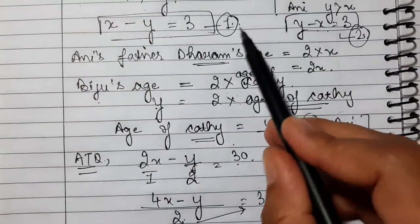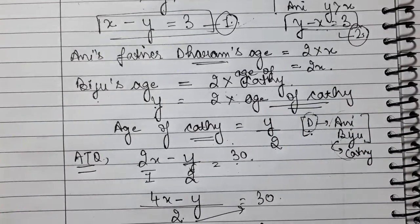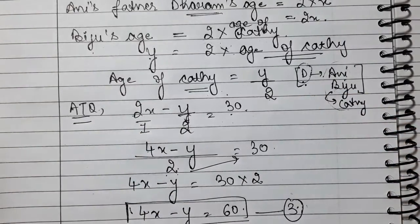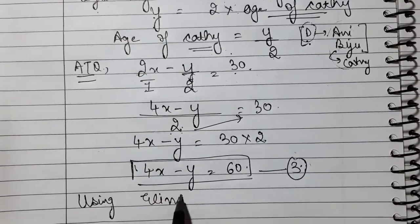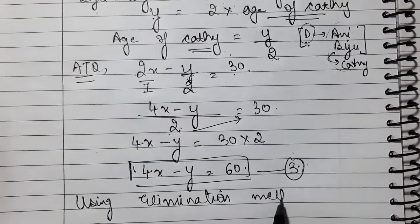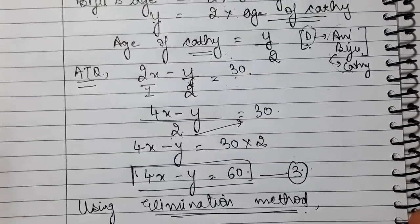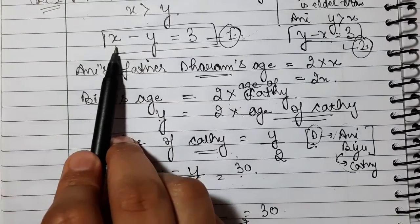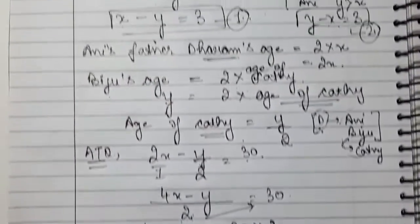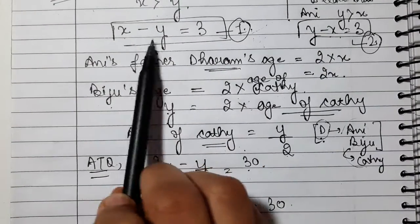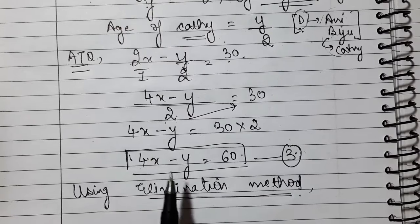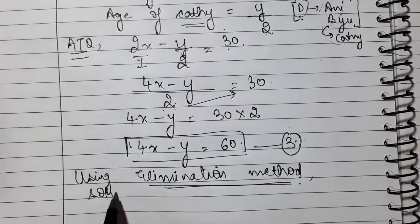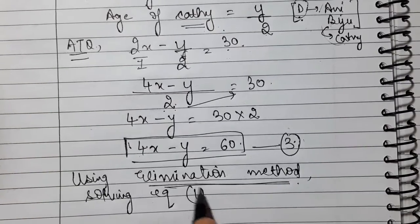Now we have to solve equation 1 and equation 3. If we multiply equation 1 by 4, this gives 4X. Then look at the other variable Y — the coefficient is minus 1 in both equations, so we do not need to multiply. We will use the elimination method to eliminate Y.